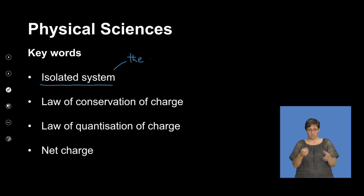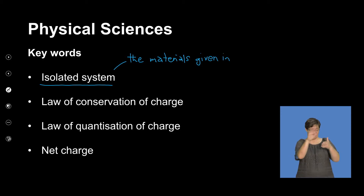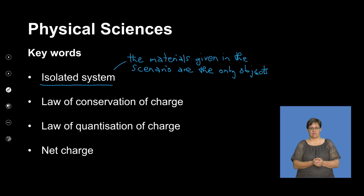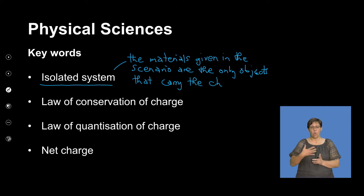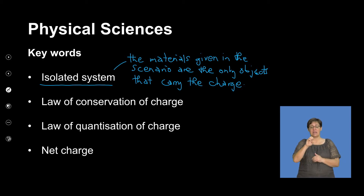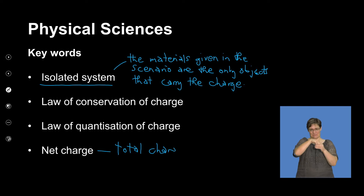The materials given in the scenario are the only objects that carry charge. In an isolated system, the only charge is what we've been given — there won't be charge going out of or coming into the system. Hence we say the net charge will remain constant. When we talk about net charge, we're talking about the total charge in that system.